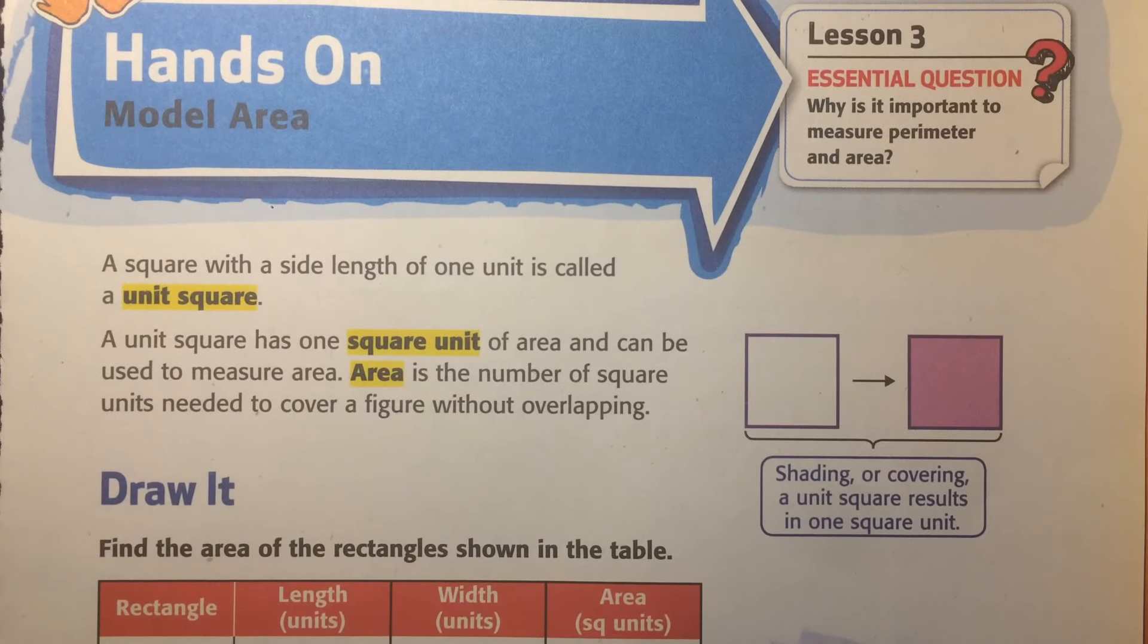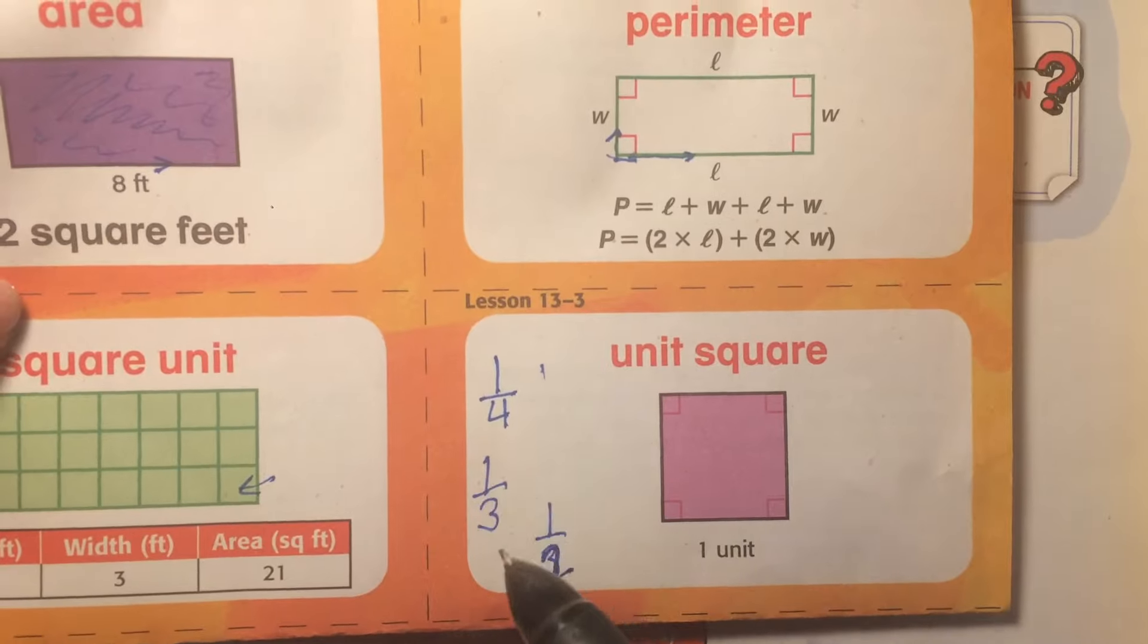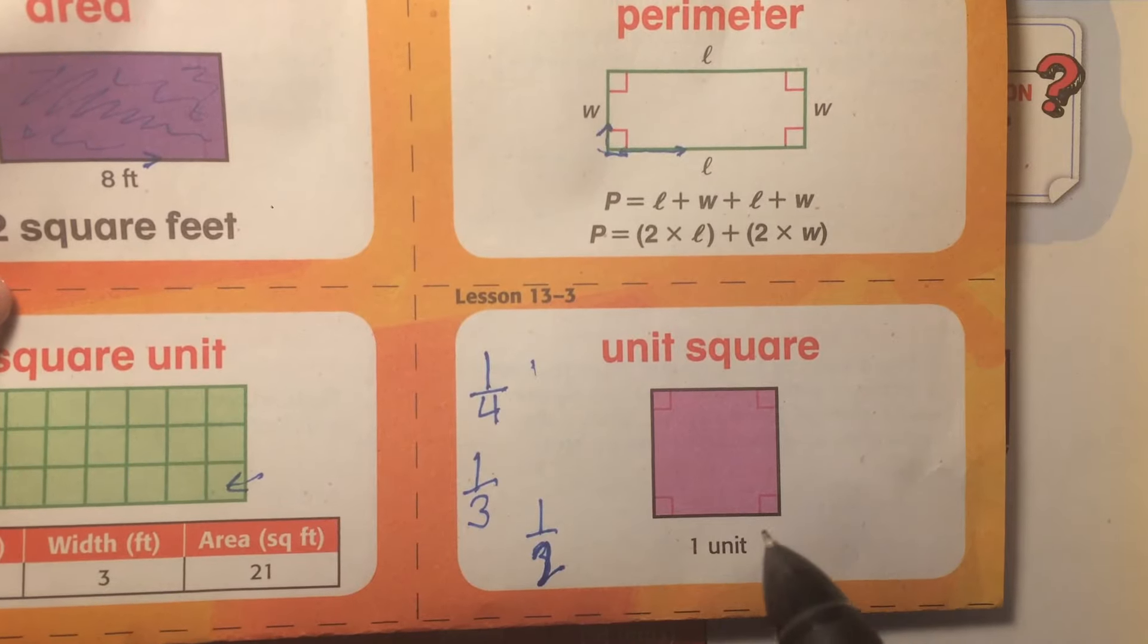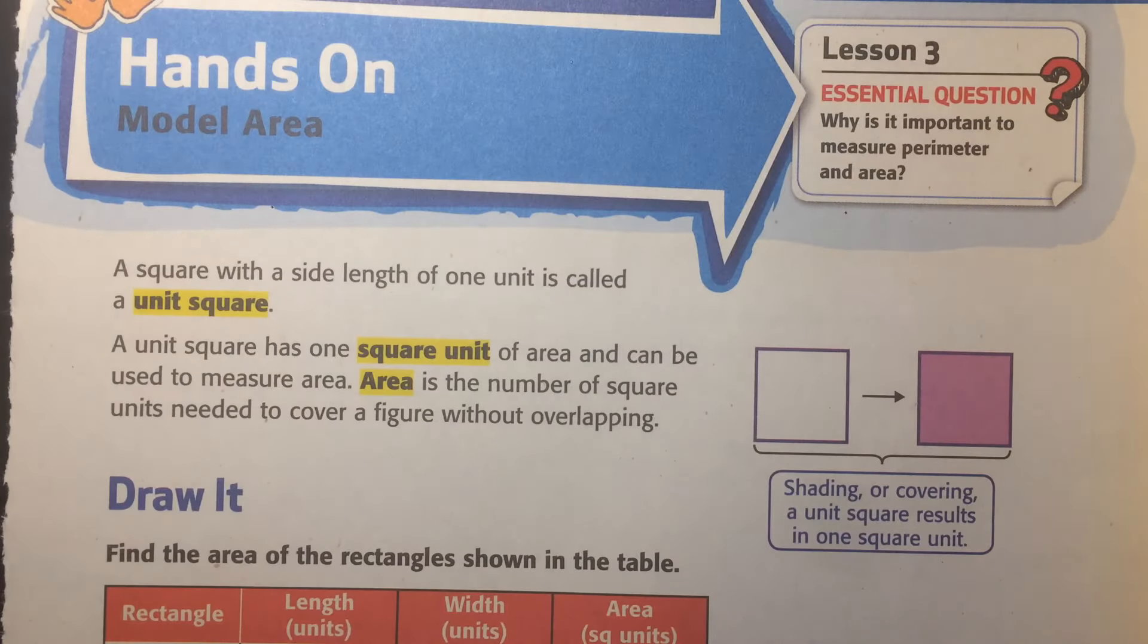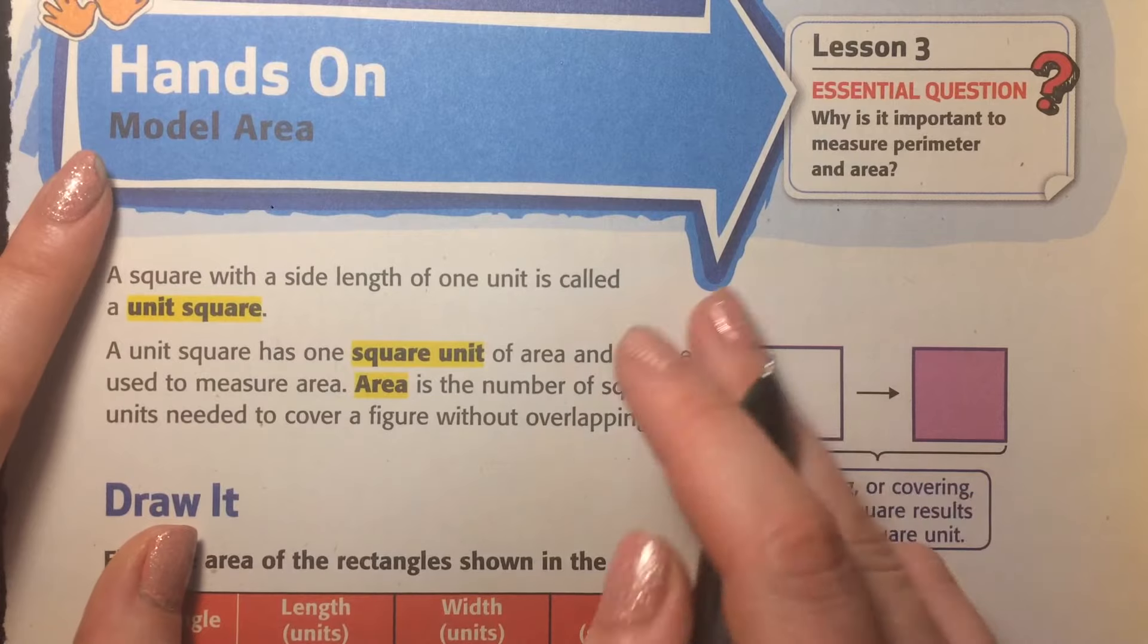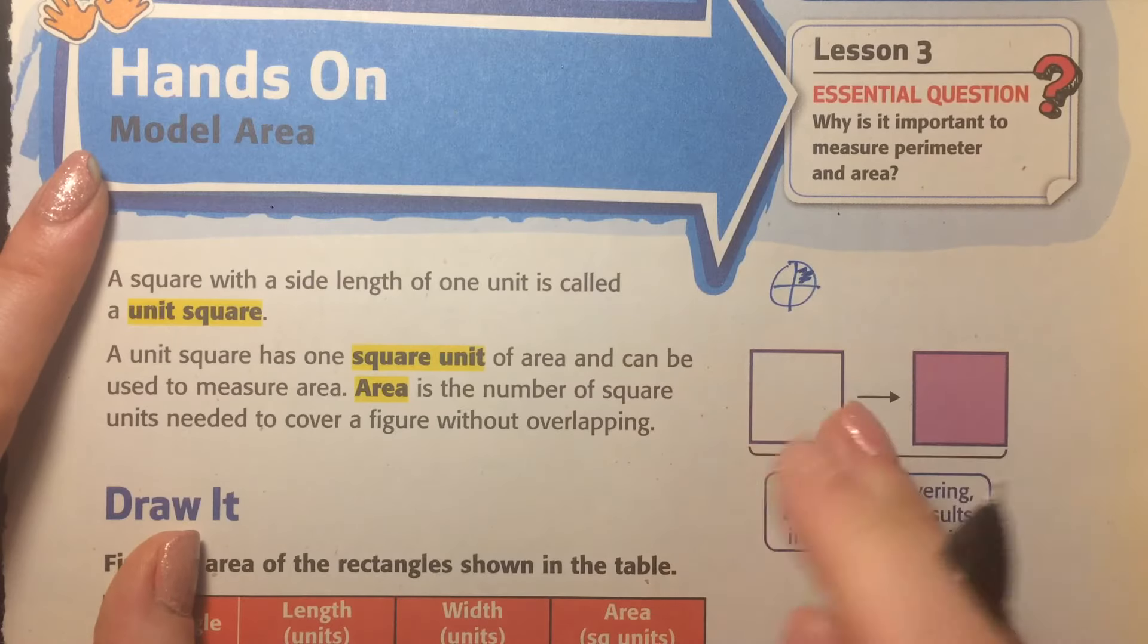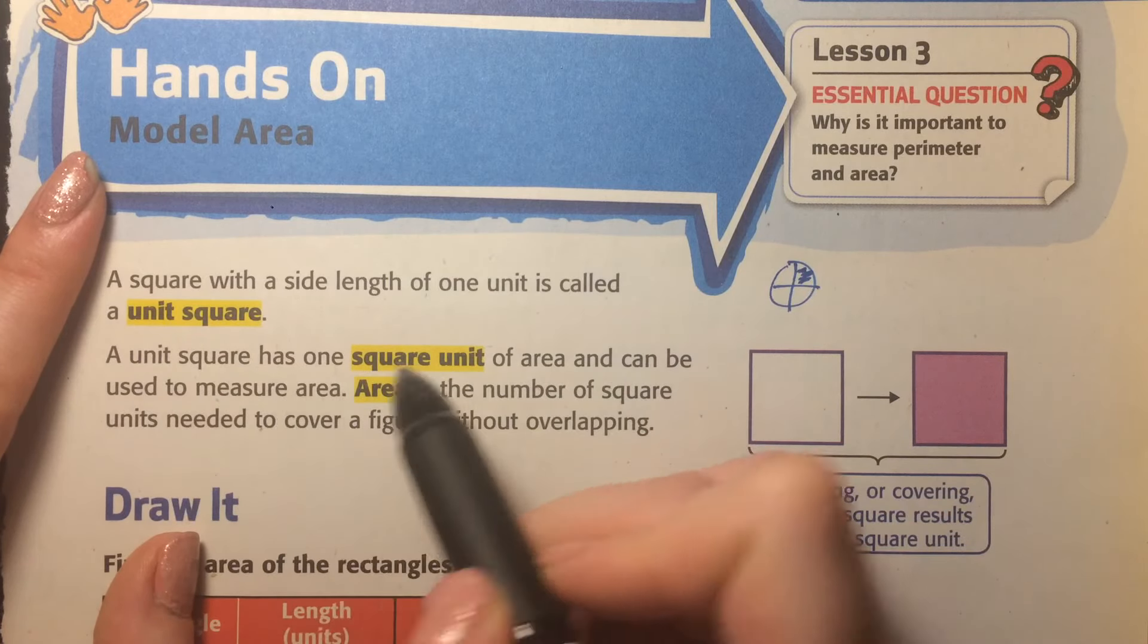A square with a side length of one unit is called a unit square. So that's what we've been talking about here. Just like unit fraction was one-fourth, or one-third, or one-half, a unit square is just one unit long. That could be one centimeter, or one inch, or one yard, or one mile. Shading or covering a unit square results in a one-square unit. So normally we show them shaded when we have it, just like with fractions. When it was one-fourth, we showed it shaded.